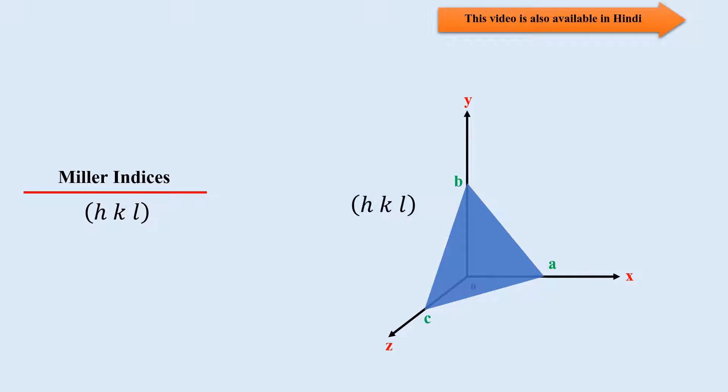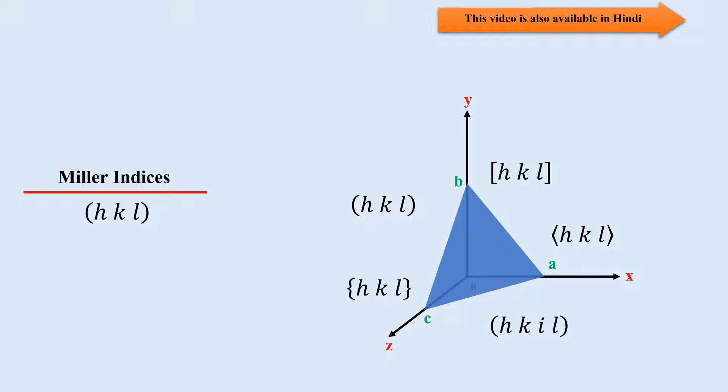Four types of brackets — round bracket, square bracket, curly bracket, and angle bracket — are used to write the Miller indices in four different conditions. Additionally, there is a crystal lattice for which, apart from the three hkl indices, a 4th index i is also needed. We will learn all about this in this video.